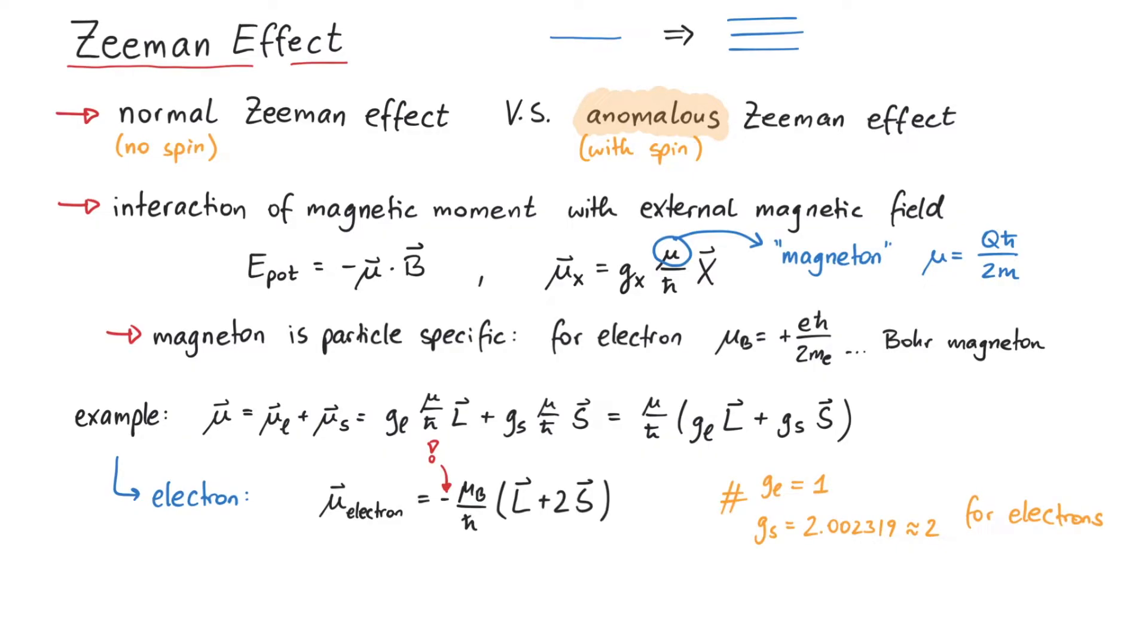What all of this tells us is that the energy levels of an electron, for instance inside a hydrogen atom, change under the influence of an external magnetic field.